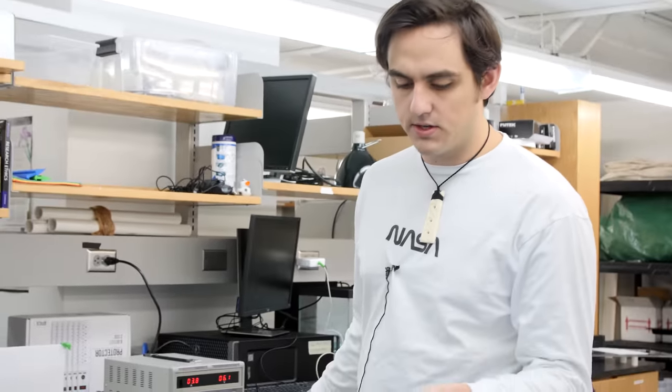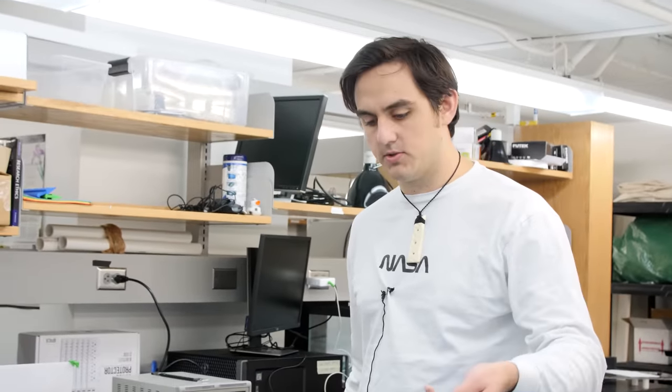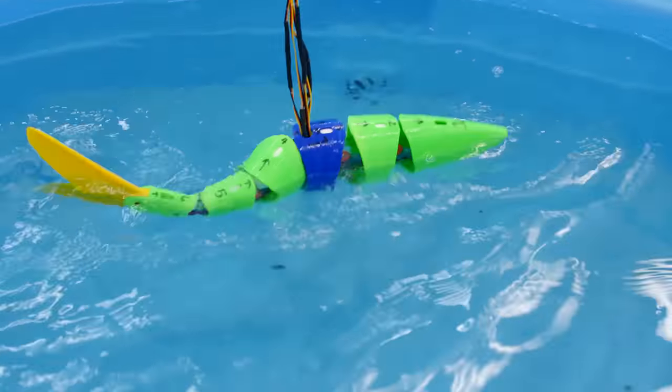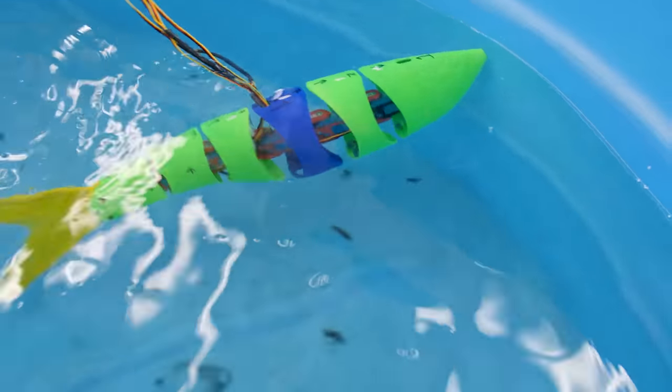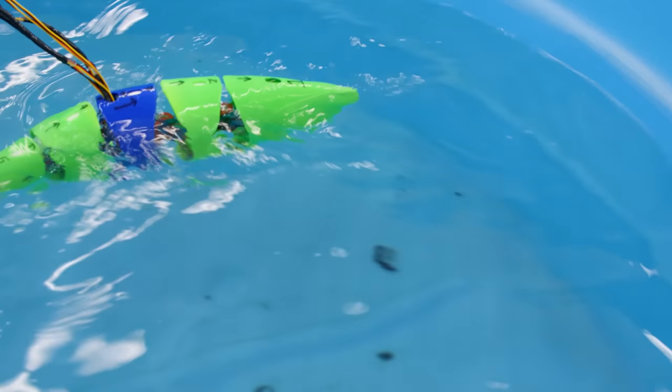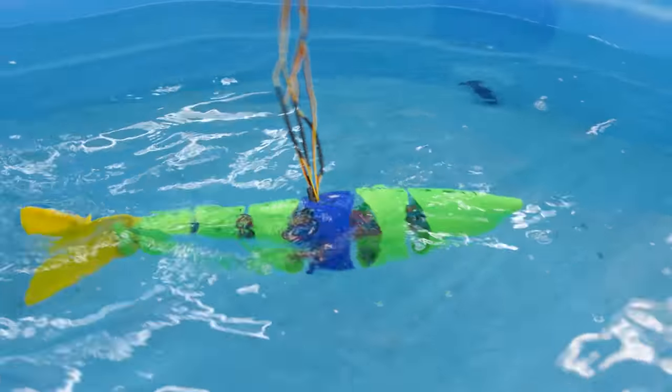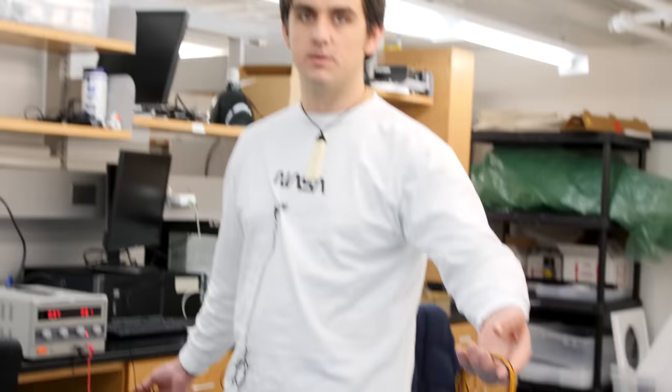Everything on this robot, save the motors and the wires, is 3D printed. So that flexible tail you see, we printed in our machine in the back. And these body shells, we copied the morphology of an actual fish. So this is based on a giant danio, which is the larger cousin of the zebrafish that you see in the pet shop all the time.